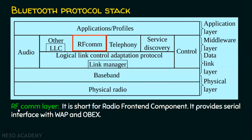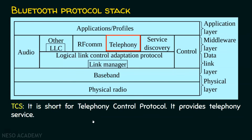Then comes the RFCOMM layer, which stands for Radio Front-end Component. It provides a serial interface with WAP (Wireless Application Protocol) and OBEX (Object Exchange). The next layer is TCS, the Telephony Control Protocol, which is used for telephony services such as voice services, fax services, or data services.